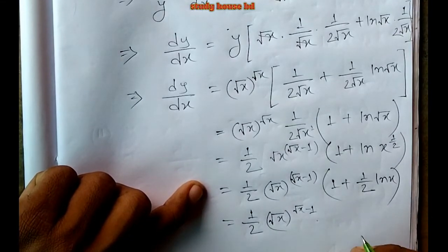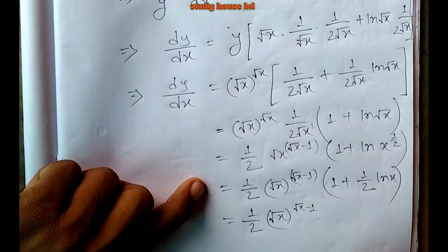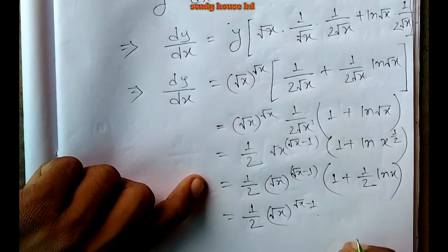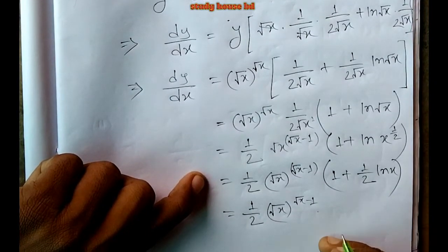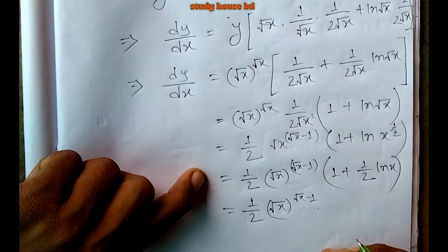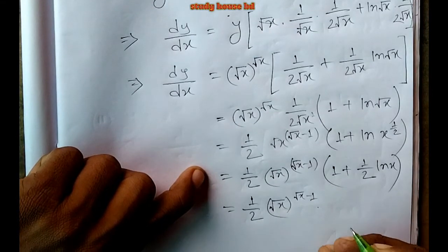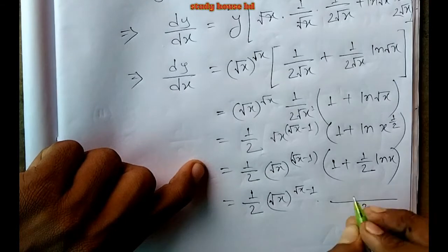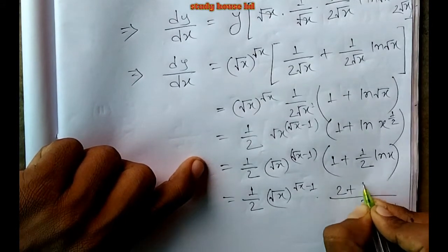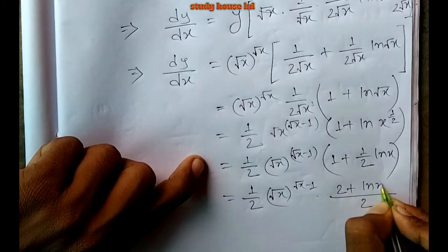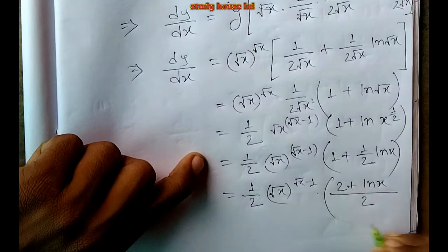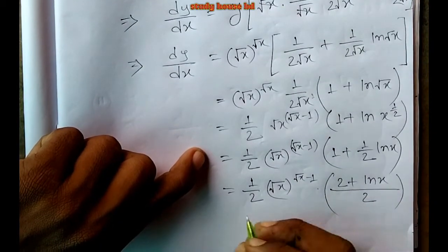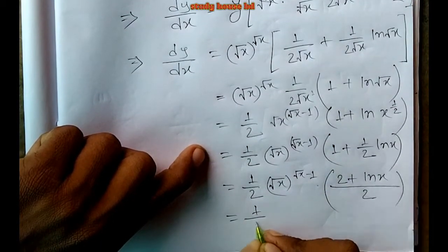Working through the simplification carefully, the answer becomes dy/dx equals (root x) to the power (root x) times (2 plus ln x) divided by (2 root x). This gives us a good final answer for the third problem.